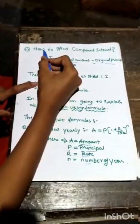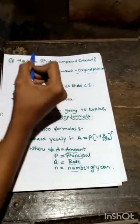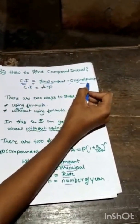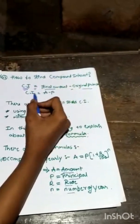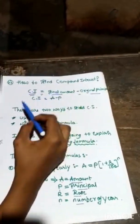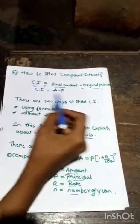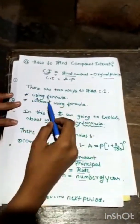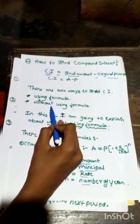So how to find the compound interest? There is one formula: compound interest is equal to final amount minus original principal. CI equals A minus P. There are two ways to find CI. One using formula and one without using formula. In these two, I am going to explain only one with using formula.